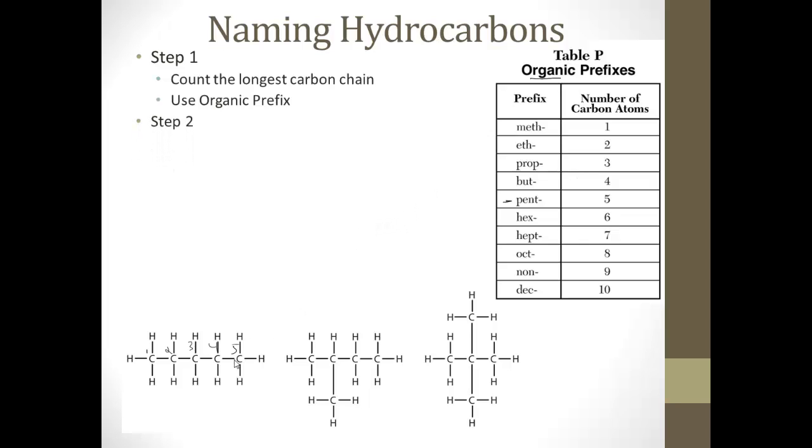Step two, we're going to look for any side chains. Okay, so you see here we have one, two, three, four, or one, two, three, four. So one, two, three, four, and a side chain. And for that, we would use the organic prefix with a -yl. So we count the carbons in the side chain, there's one. So it's meth. We add the -yl. So methyl. So this would be methyl. One, two, three, four. But. So this would be methyl. And we'll see in a moment, butane.